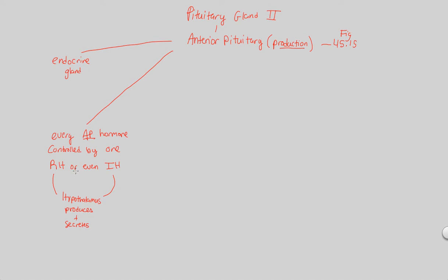So what is the function that the anterior pituitary will be doing? That function is production of hormones. We're now going to be looking at the hormones that are produced — and I would say secreted — by the anterior pituitary, and there are several of them.